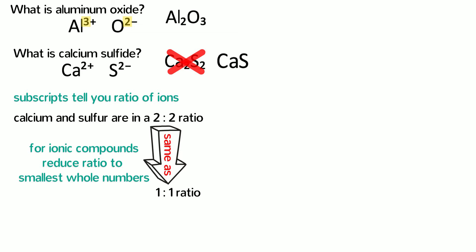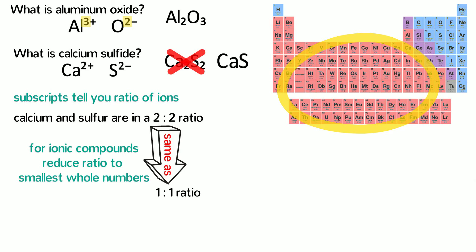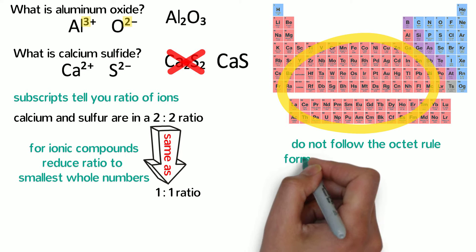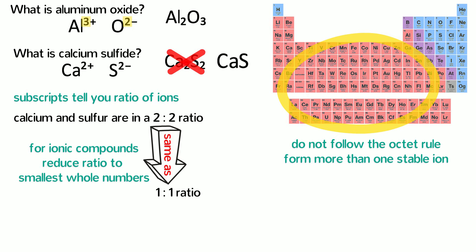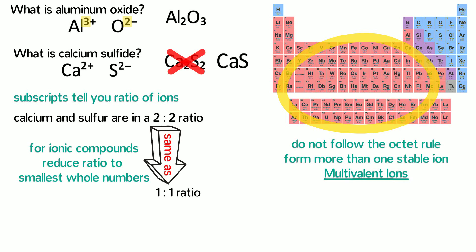Okay, we're almost done with how to name binary compounds, but what about all those metals in the middle of the periodic table? It turns out they do not follow the octet rule, and most of them can form more than one different stable ion. Therefore we will call them multivalent ions. For example, iron can form positive 2 or positive 3 ions.